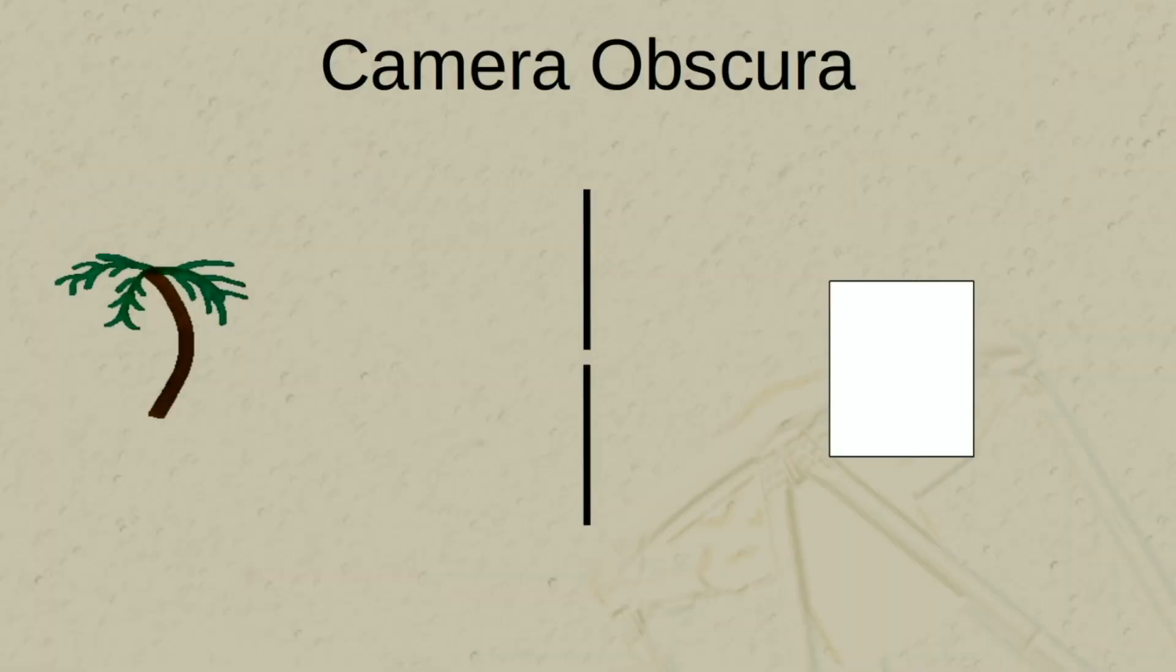Before we start making the camera obscura, let me explain how it works. I have here a diagram that I hope will help me explain how a camera obscura works. On the left is a stick figure palm tree that represents the object that's going to be imaged by the camera obscura.